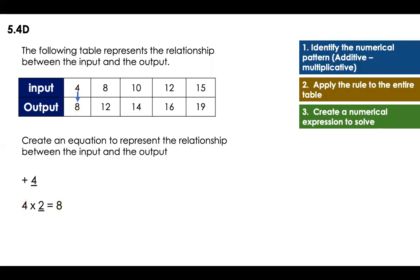That means that I have two options, plus four or times two. How do I know which one of those is the one that I'm going to use? I have to apply the rule to the entire table, that is the second step. So let's do the second one.